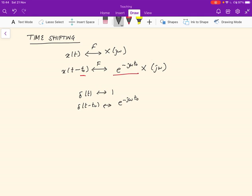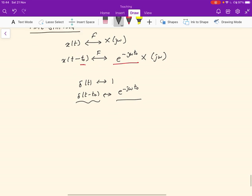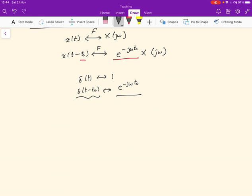So essentially, we are seeing that if we were to time shift the delta to the left in time, then it corresponds to a complex exponential with the frequency of omega t naught.